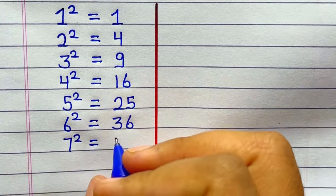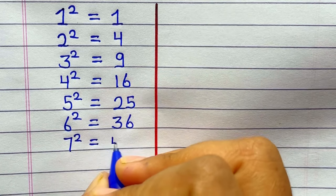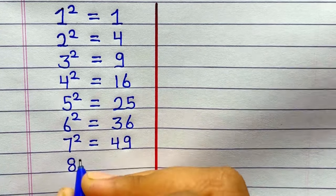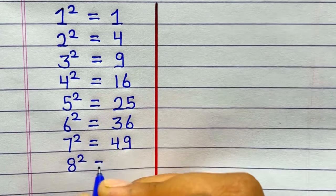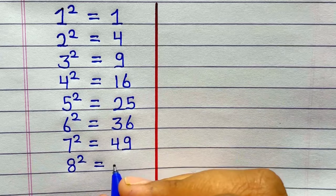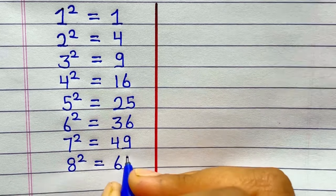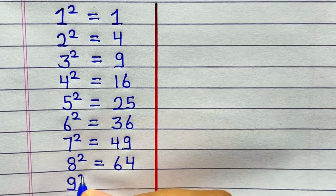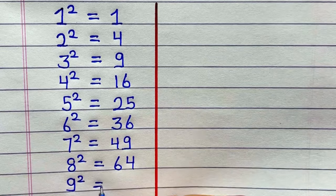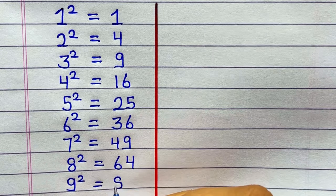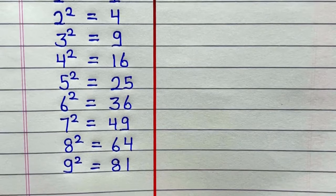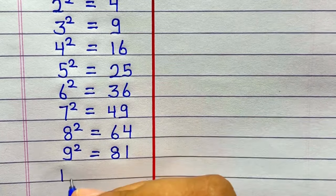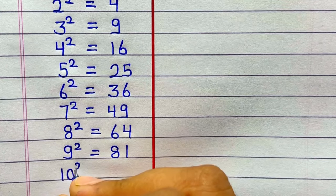7 ka square hai 49. 8 ka square hai 64. 9 ka square hoga 81. 10 ka square hai 100.